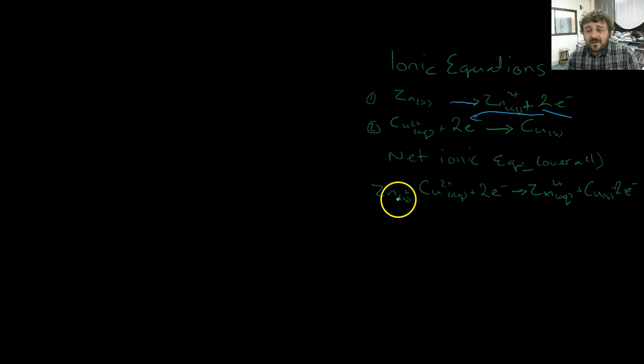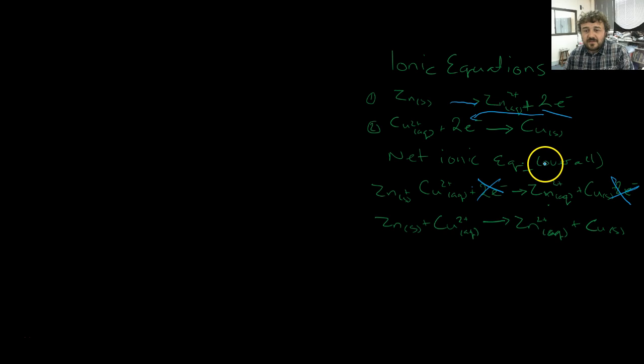So zinc solid plus copper plus the two electrons that are free gives us zinc aqueous two plus plus the copper solid plus the two electrons. Now we don't need to have that on there, they cancel each other out, so we'll cancel them out, which gives us this is our net ionic equation. So you've got zinc, this is the formation and transfer of electrons in an ion. That's what we're looking at here. So we've got zinc solid plus copper ion goes to zinc ion plus copper solid.